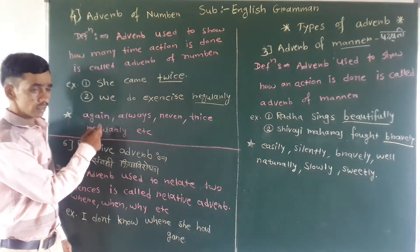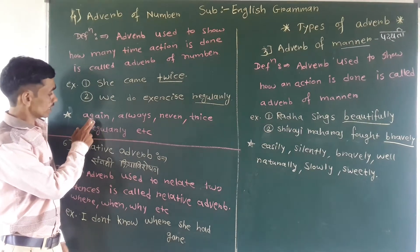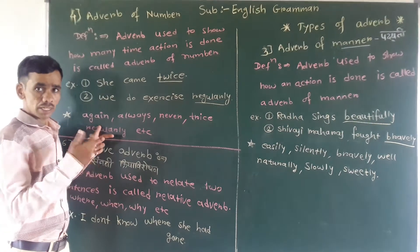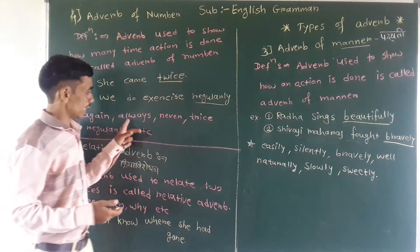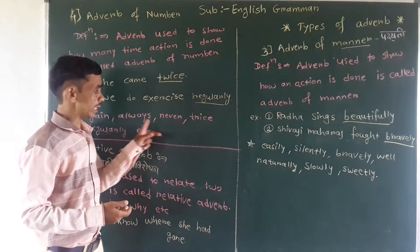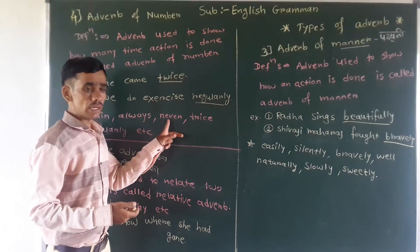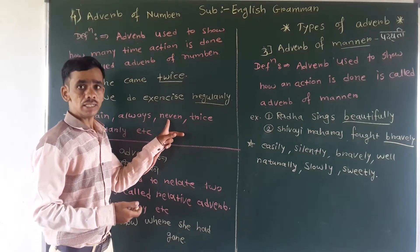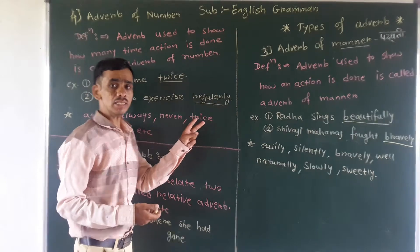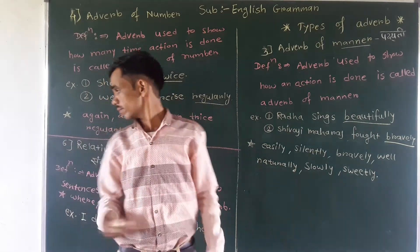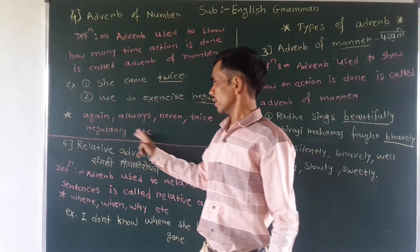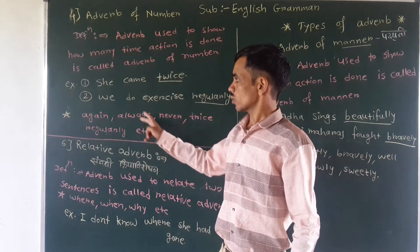For example, the words are: again — means repeat; always; never — kabhi nahi, kadish nahi; thrice — means three times; regularly, etc.